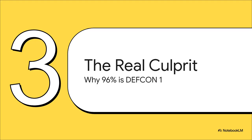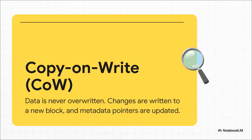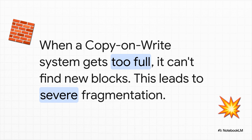With both of our main suspects cleared, we finally get to the big reveal. The real culprit has been staring us in the face the whole time — it's the pool's utilization itself. This is where ZFS gets mean. 96% full isn't just a number; our source material calls it DefCon 1 for your storage. We're in the danger zone. To really get why this happens, we need to talk about what makes ZFS tick: copy-on-write, or CoW. Most file systems, when you change a file, just overwrite the old data. ZFS never does that. Instead, it writes the changes to a totally new block and then updates its map to point to the new location. It's a brilliant system for keeping your data safe — but there's a catch. When a copy-on-write system gets this packed, it starts having a really hard time finding those fresh new blocks to write to.